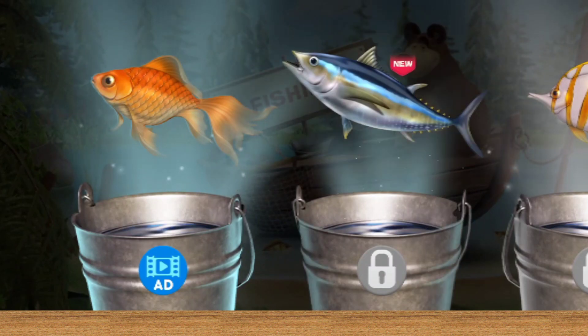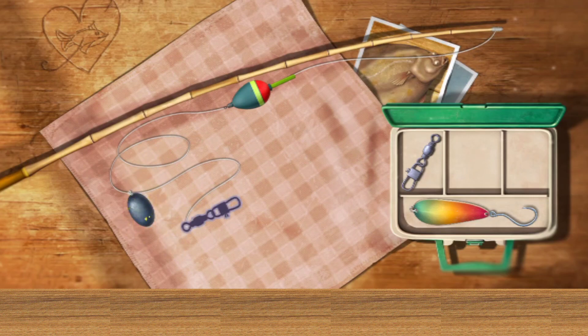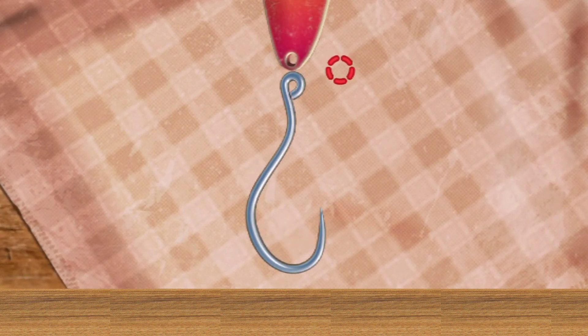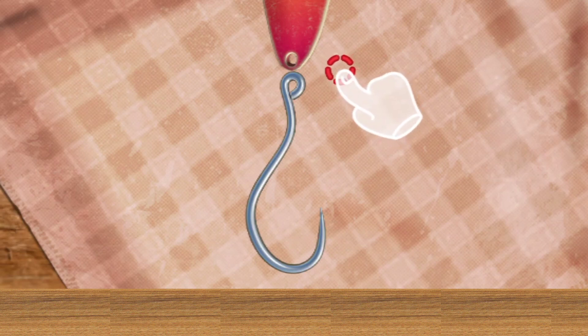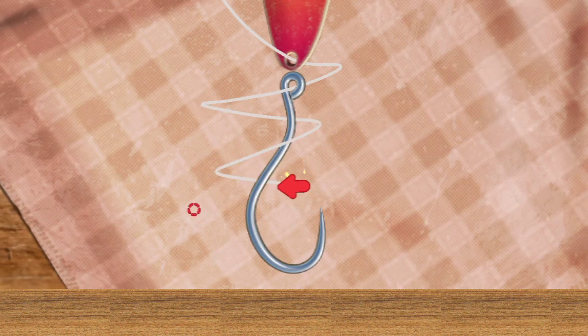Choose a fish to catch. Build a fishing rod. The rod is almost ready — now all that's left to do is tie the hook. Press the pulsing mark to tie the hook. Great, now let's go fishing!